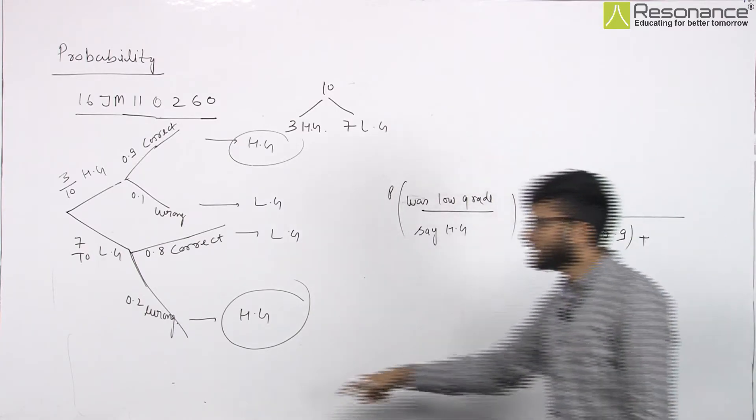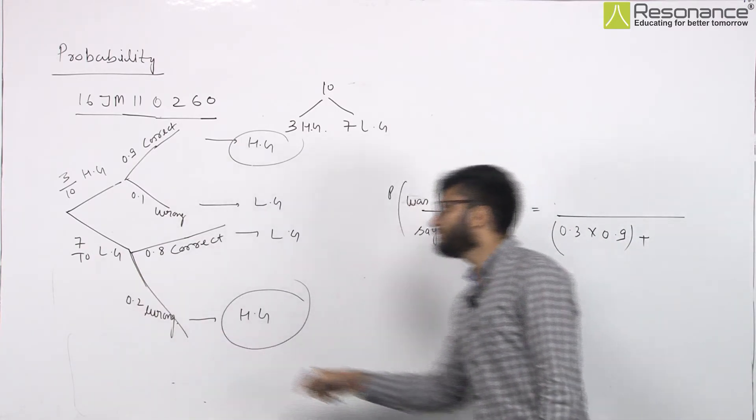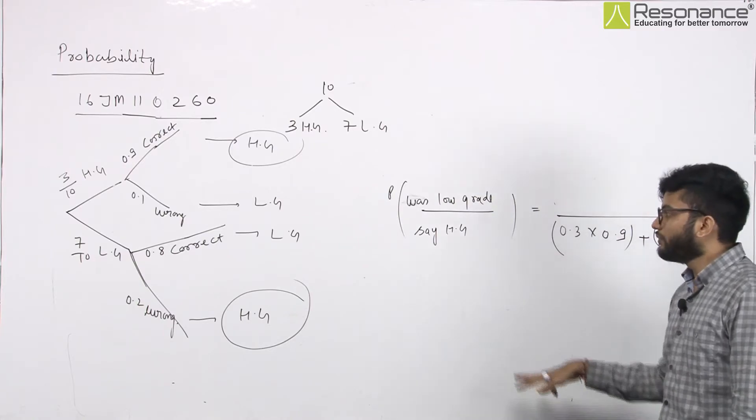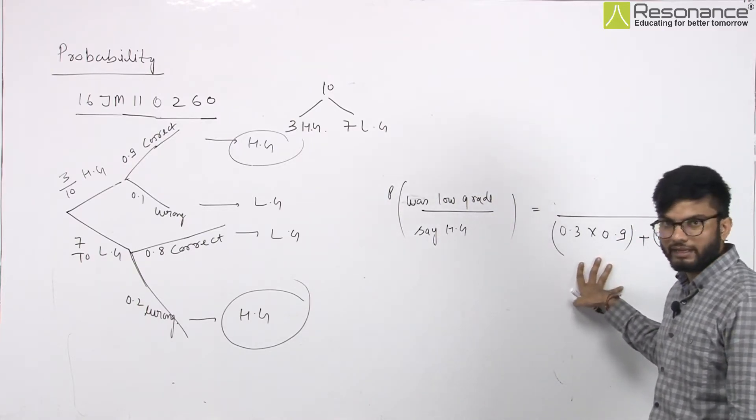0.3 was high grade and correct. What can we say? 0.7 into 0.2. These are our chances. Now, these are your total chances when it was high grade.